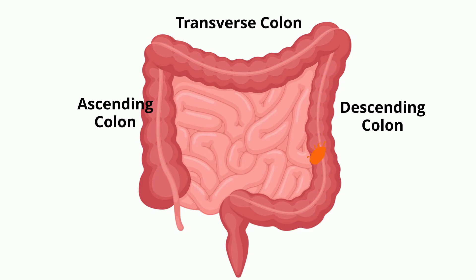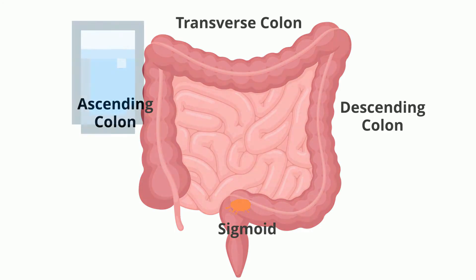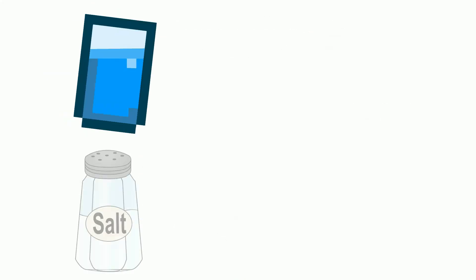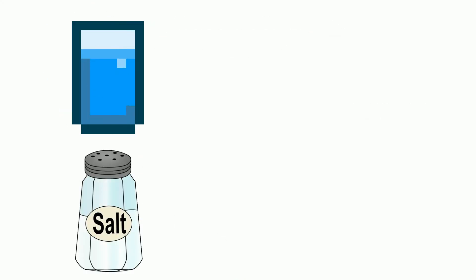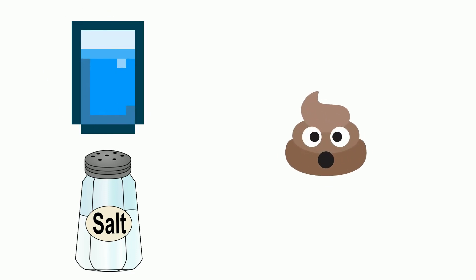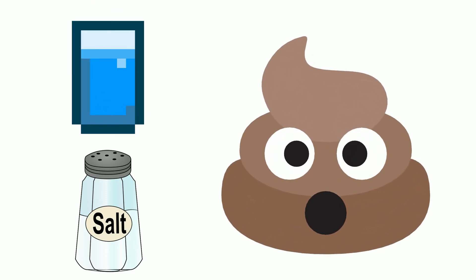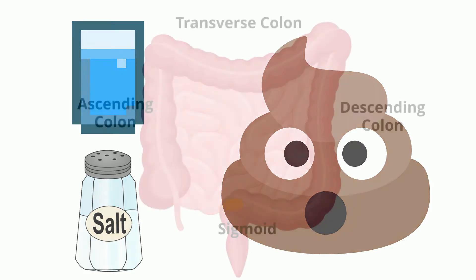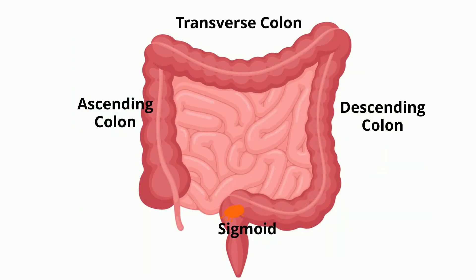Next, it travels into an S-shaped section called the sigmoid. Water and salt are absorbed in the large intestine, and food is eventually converted into feces. The feces is stored in the sigmoid until it travels to the rectum and then exits the body.